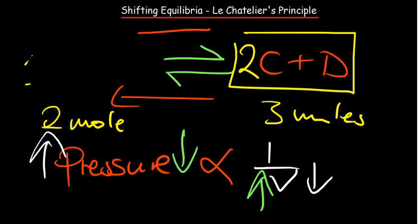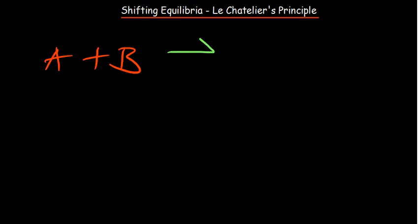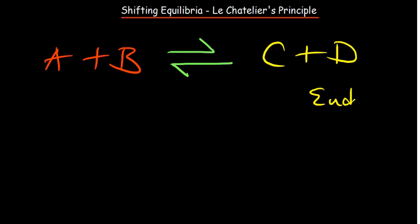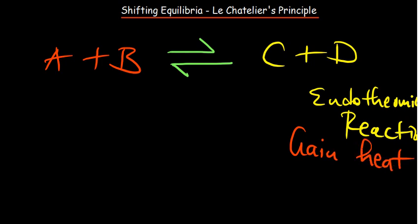Now let's talk about the most interesting factor — temperature — because it depends on the kind of reaction: endothermic or exothermic. Let's use the same example with products C and D. Let's say this is an endothermic reaction. An endothermic reaction is one where the system gains heat. In some questions, you may find that energy is written on the reactant side, for example '+10 J', implying this reaction needs to gain energy to progress.